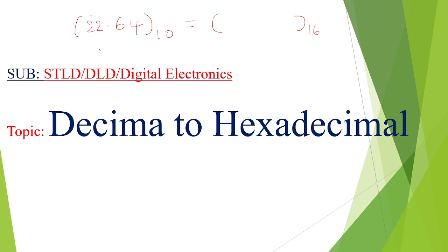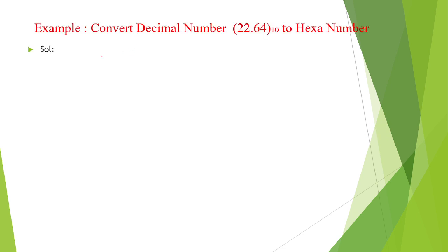So for this, first we need to convert 22 and then after we need to convert 0.64 to hexadecimal. For that, I will take 22, divide with 16.